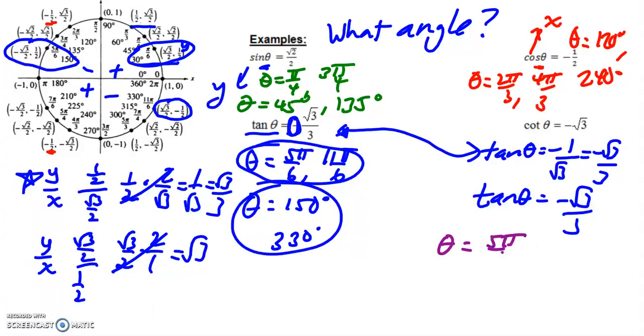So theta is again 5π/6 or 11π/6, and theta in degrees is either 150° or 330°.